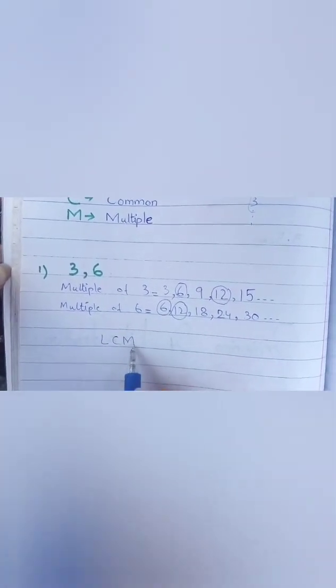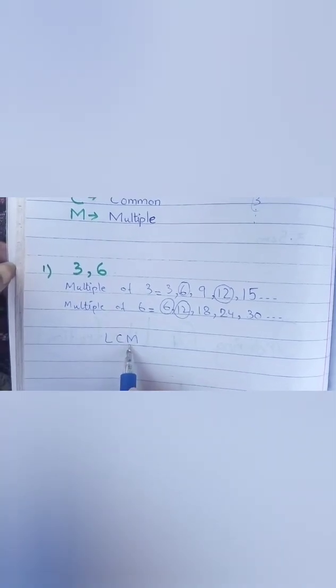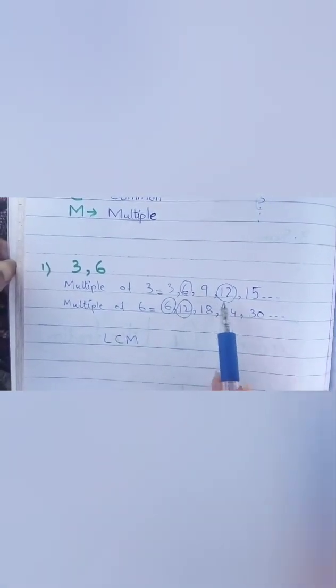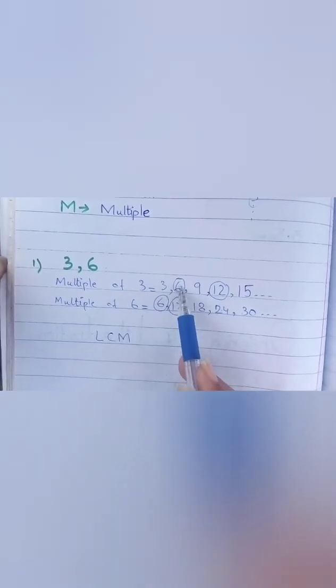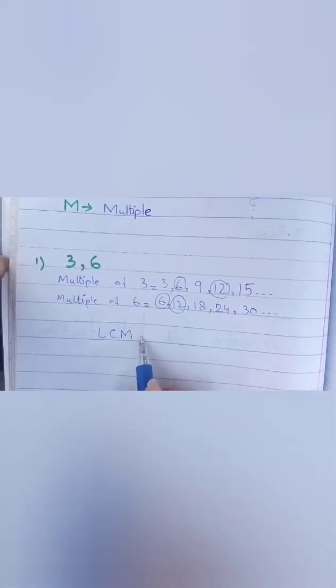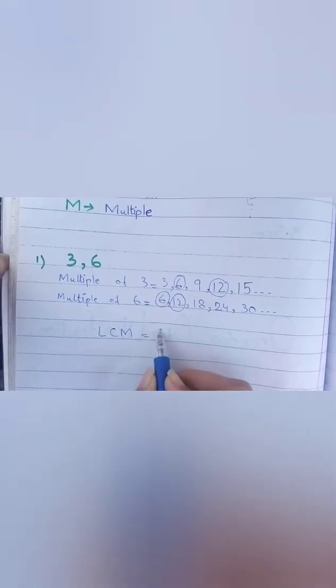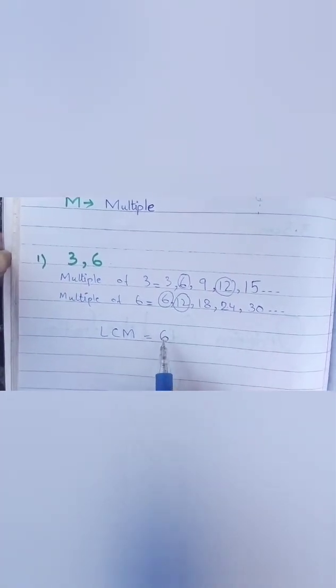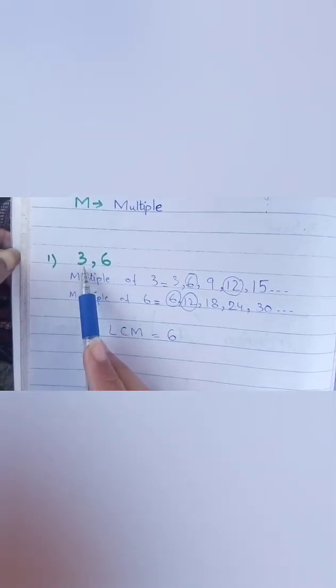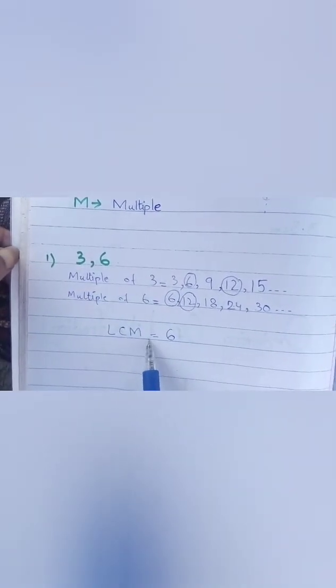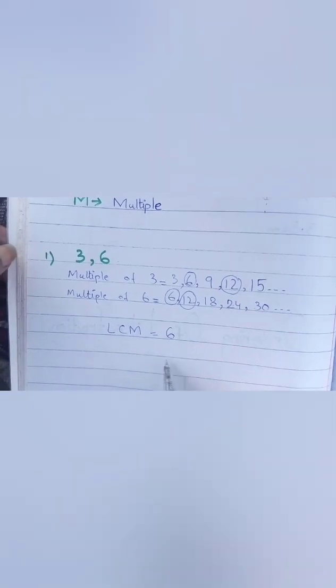Yes, twelve. Now there is another digit which is common. LCM stands for lowest common multiple, lowest means small. Now twelve is small or six? Six is the lowest multiple of these numbers. So you can write six, this is the LCM of three and six. What is the lowest common multiple, this is your answer.